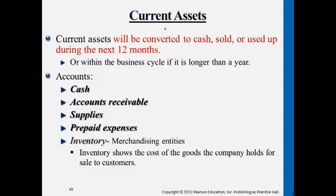Supplies is another definition. Supplies are easily used up — this is a type of resource that only has a lifetime within a business of less than a year. If it's longer than a year, we don't classify it under the supplies account. Other types like equipment and machinery are what we call long-term assets, shown in the next slide. Supplies represents things like stationery, papers, and folders in the office — things used on a daily or monthly basis that can easily be used up within a year. That's what we call a current asset.